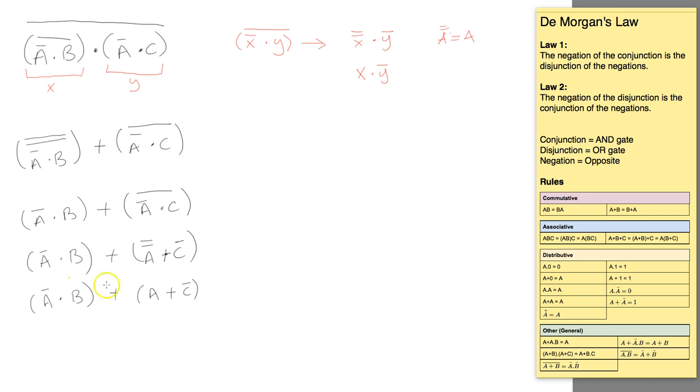Okay, now the mistake I made was trying to convert this into an or gate, but really there's no rule that allows that to happen. We are now in its most simplistic form because there's no not gate above and there's no rule that allows us to modify that into an or gate, so we leave that as it is.